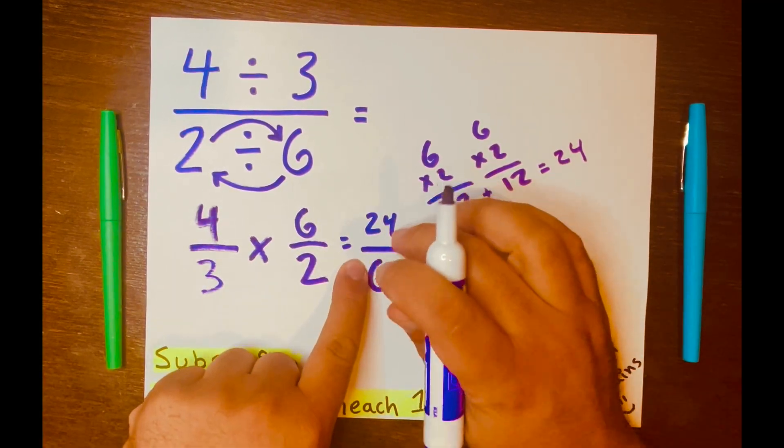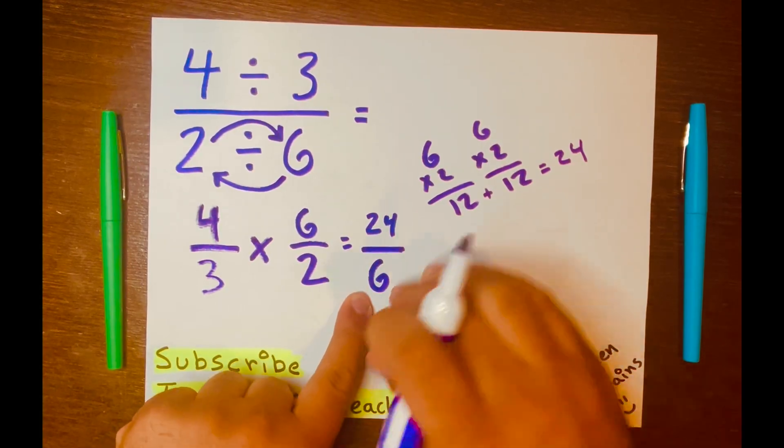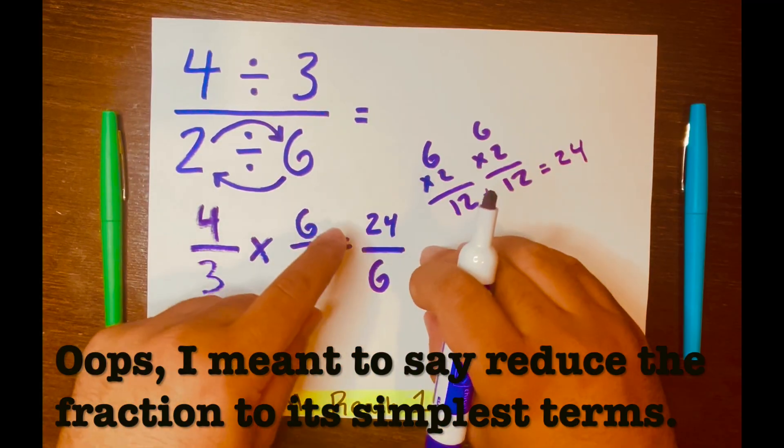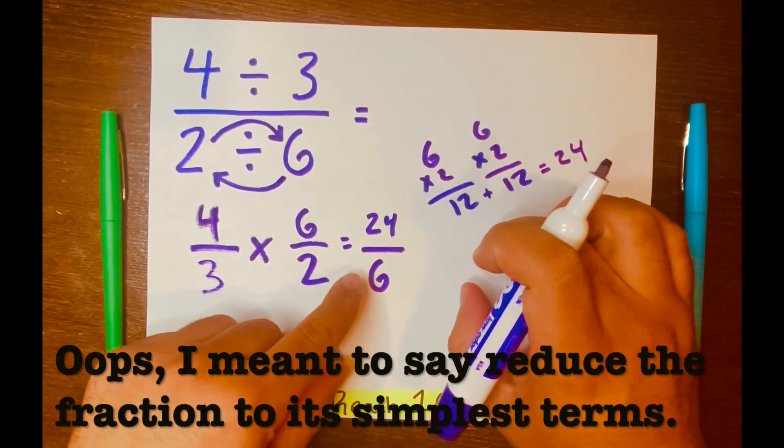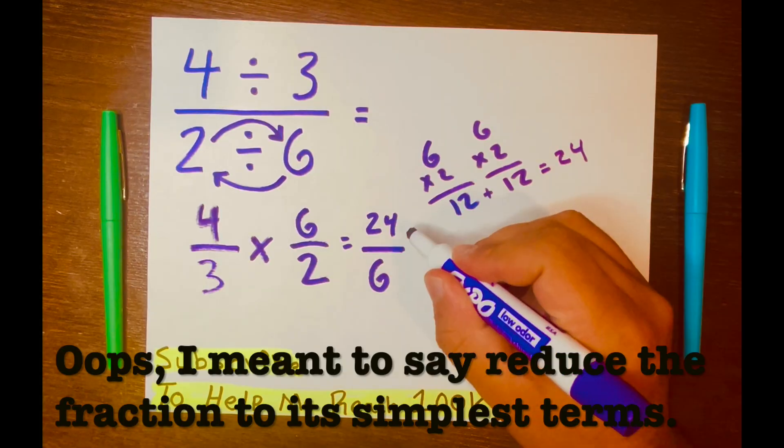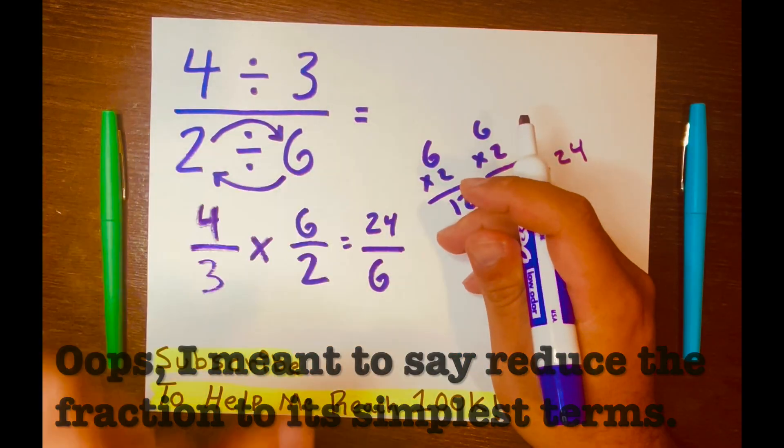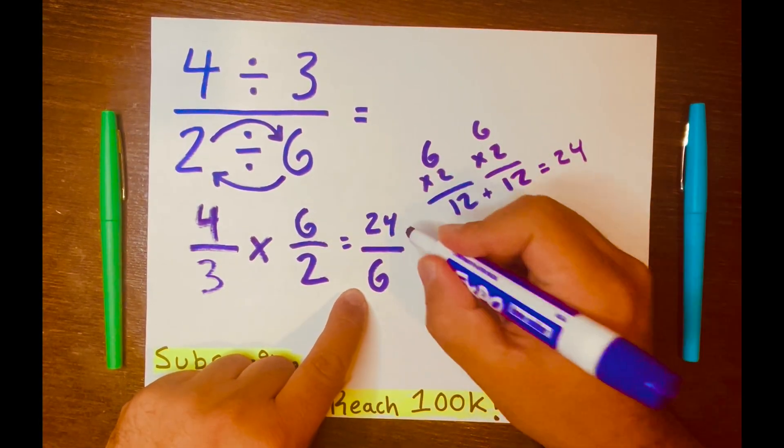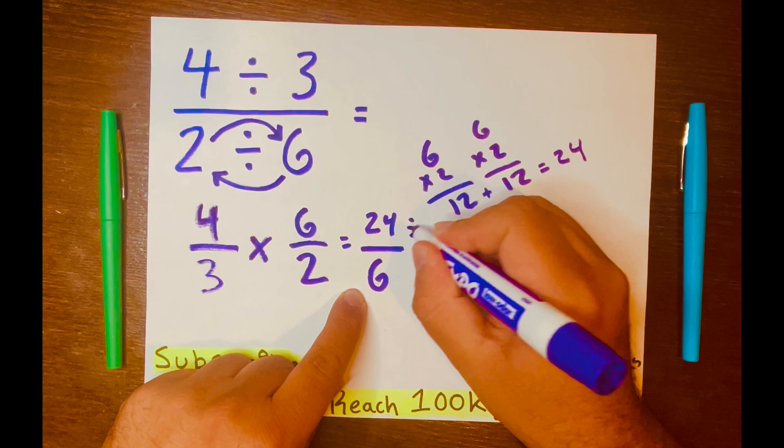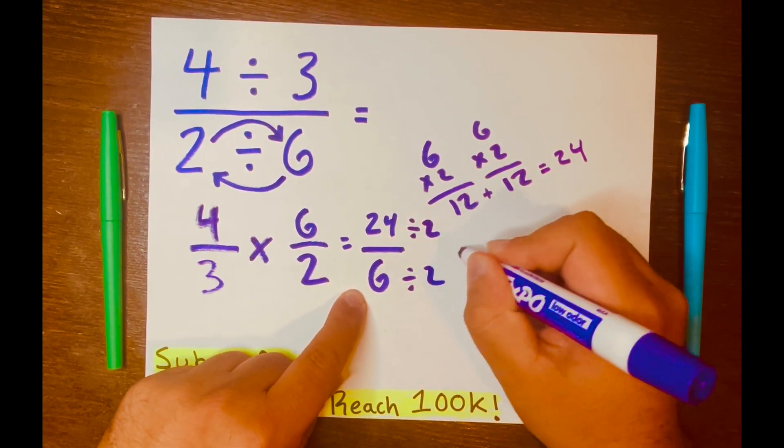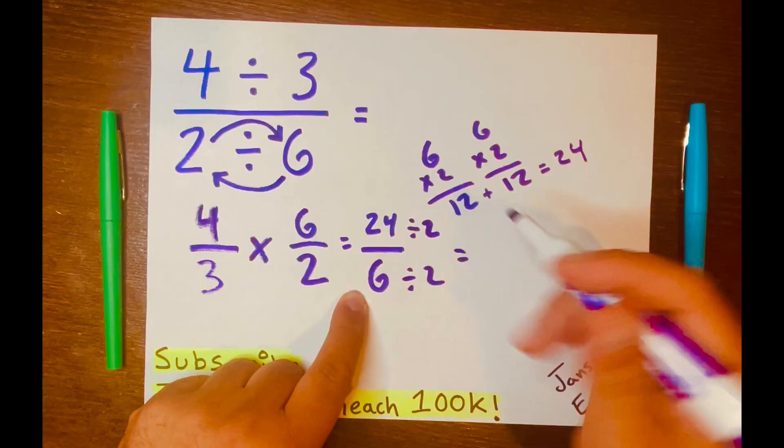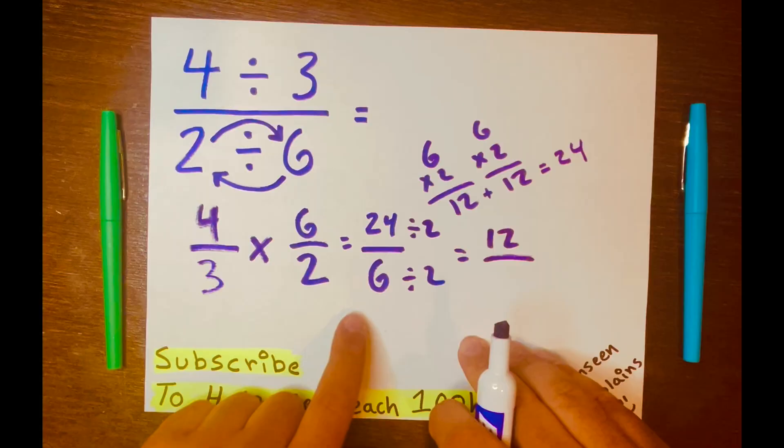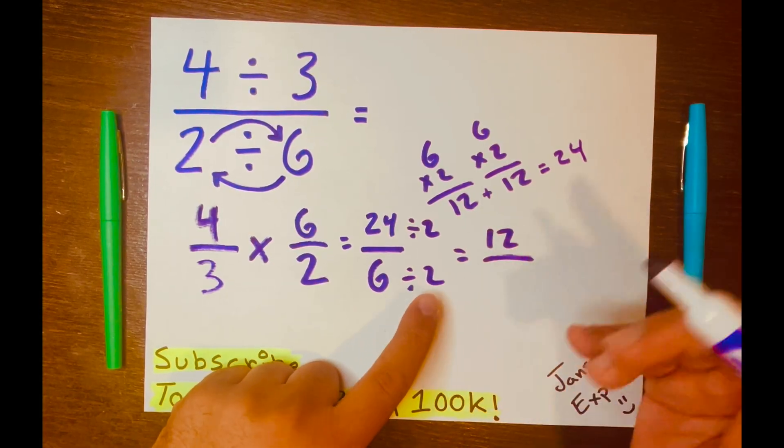And now we have an improper fraction, 24 over six. And we need to break this down or turn this improper fraction into its simplest terms. So what we can do is divide by two because the top number is 24, it's an even number, and the six is an even number. So we can go ahead and divide by two. So 24 divided by two gives you 12 over six divided by two equals three.